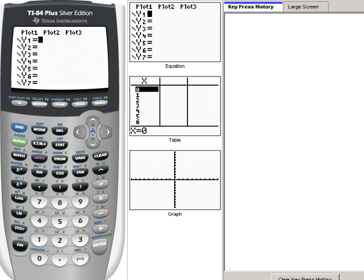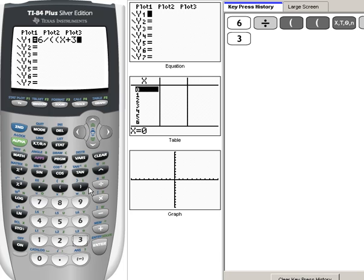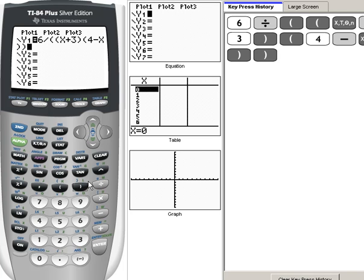So, back on my calculator screen, in my y1, I'm going to type in 6 divided by, now I'm opening up a parentheses for the denominator, and I'm opening up a parentheses for the x plus 3 term, and then I'm going to also put in parentheses the 4 minus x term, and then I'm going to have to close the entire denominator.